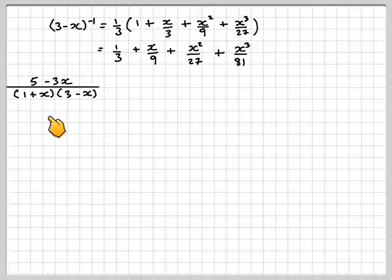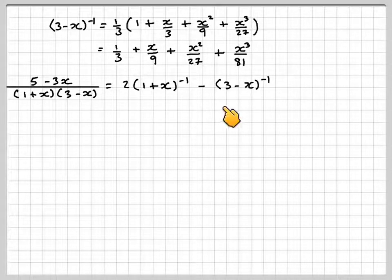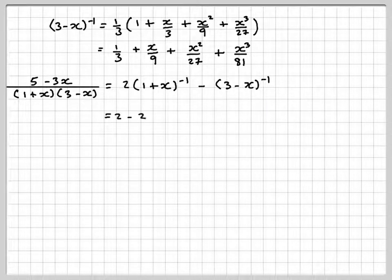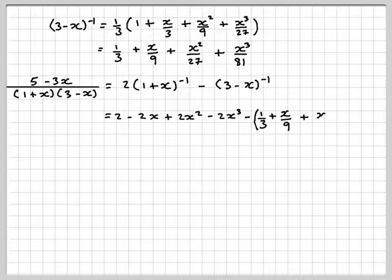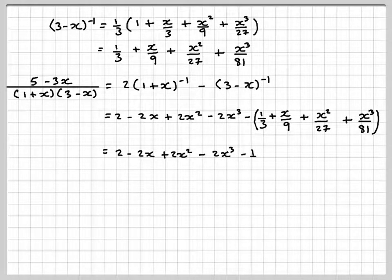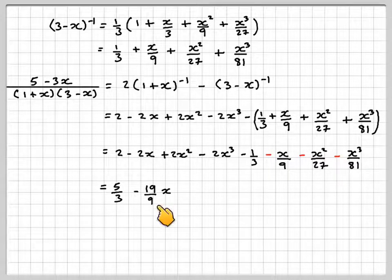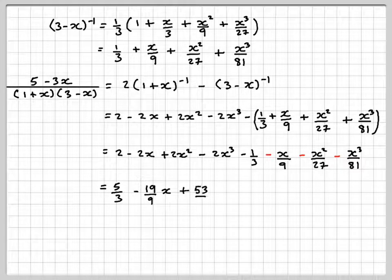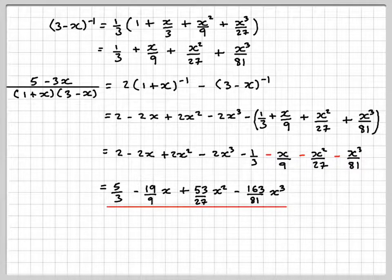So 5 minus 3x over 1 plus x, 3 minus x is the same as doing 2 times 1 plus x to the minus 1 minus 3 times 3 minus x to the minus 1. So that's going to be the first one, which is 2 minus 2x plus 2x squared minus 2x cubed minus all of this. We're removing the brackets, so we'll get minus 1 third minus x over 9 minus x squared over 27 minus x cubed over 81. So using my calculator using the fraction button, I'm going to get 5 over 3 minus 19 over 9x minus 53 over 27x squared minus 163 over 81x cubed. So expanding that, we just need to apply the binomial theorem twice.